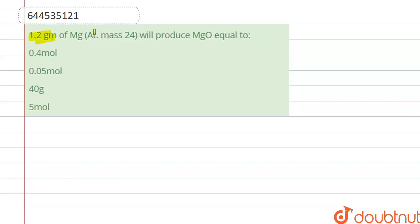1.2 gram of Mg, whose atomic mass is 24, will produce MgO equal to what? Among the options, we have to find out what 1.2 gram of Mg will produce in terms of MgO. So first,